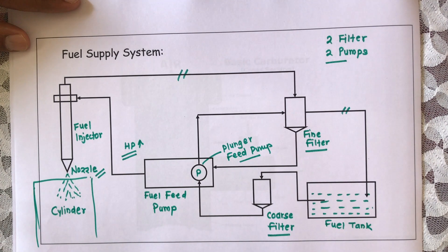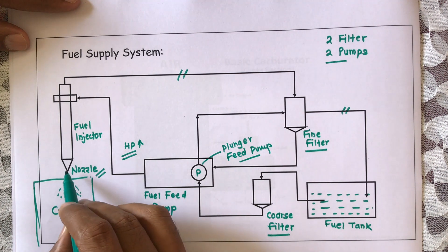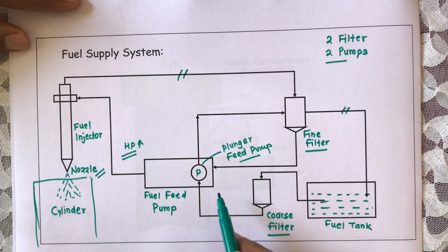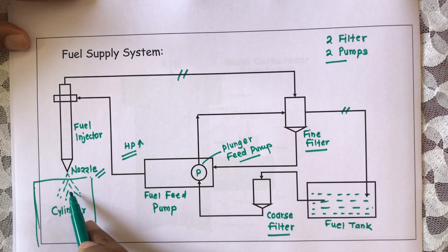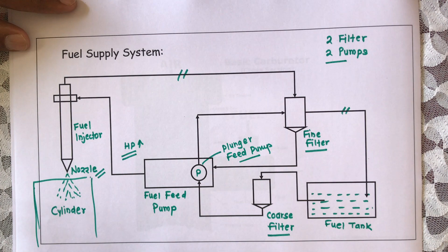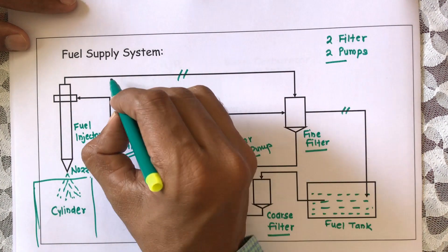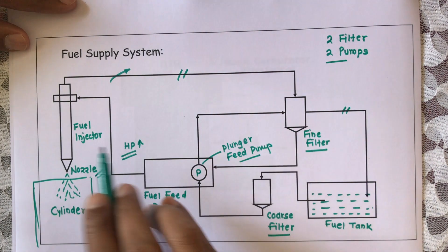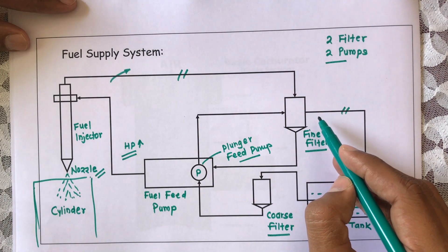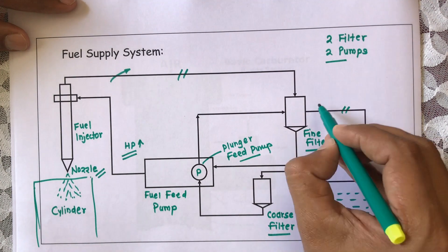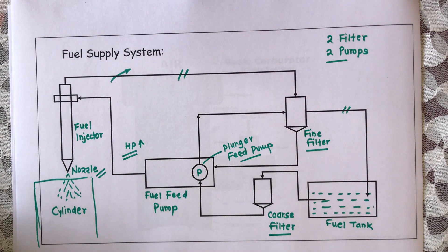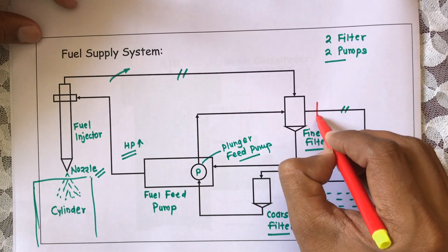You can see two extra lines here. These are the return lines. If the fuel that is pumped and compressed is more than the required quantity to be injected inside the cylinder, then that excess fuel will be supplied back through the coarse filter and back to the fuel tank.